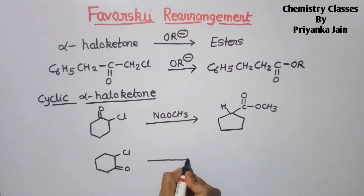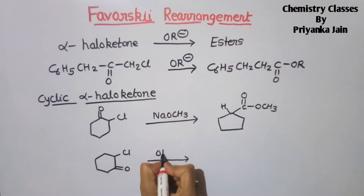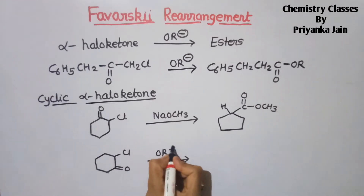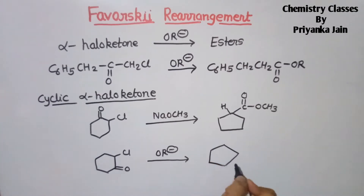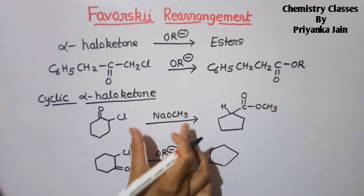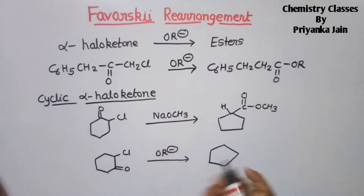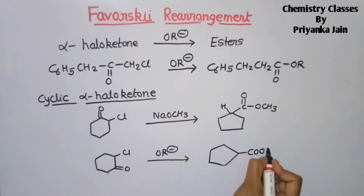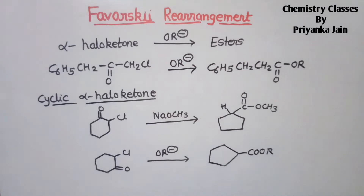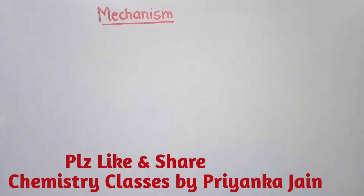If the same ketone is treated with OR minus ions, we get the same type of reaction. With NaOCH3 or any other alkoxide ion, we get COOR in the same way. Now we have to see the mechanism of this reaction — how this reaction proceeds.